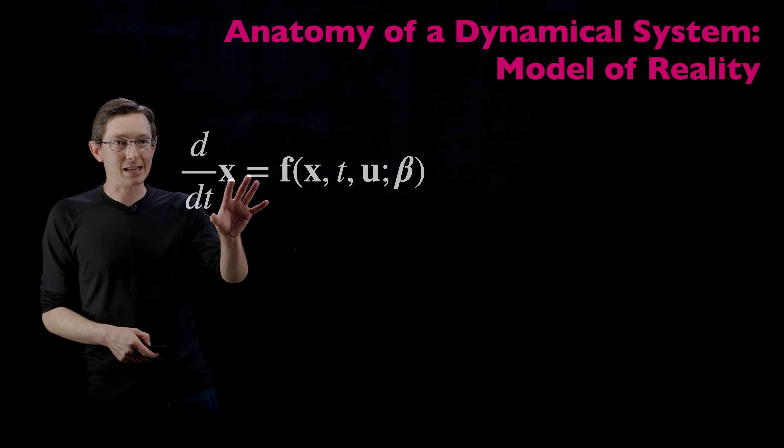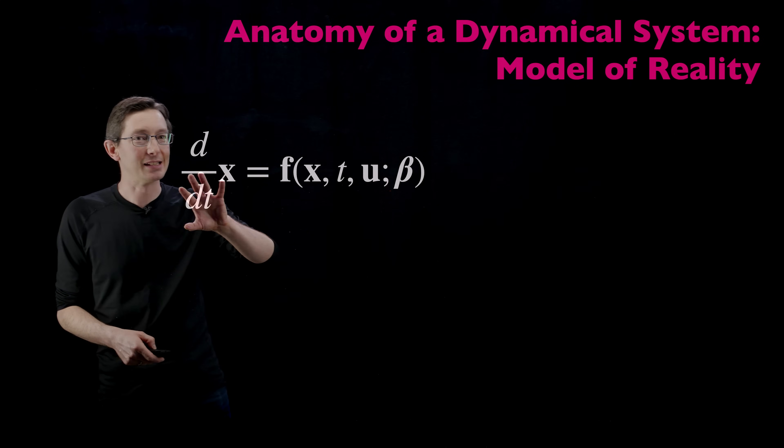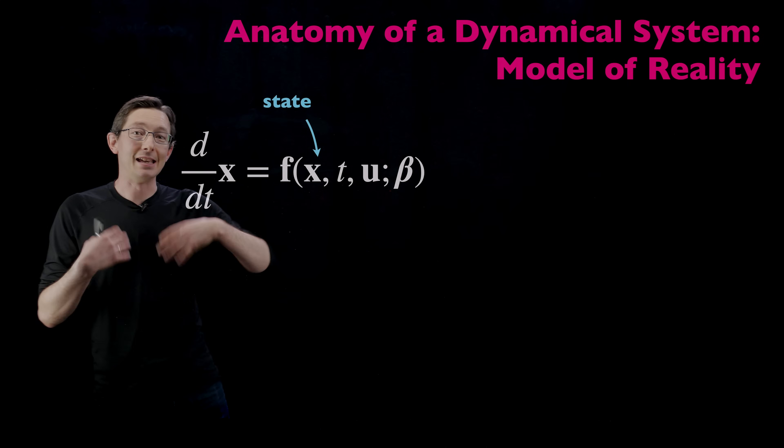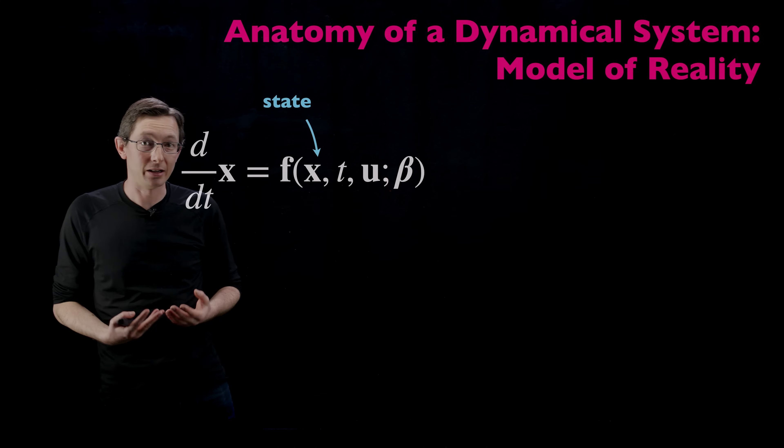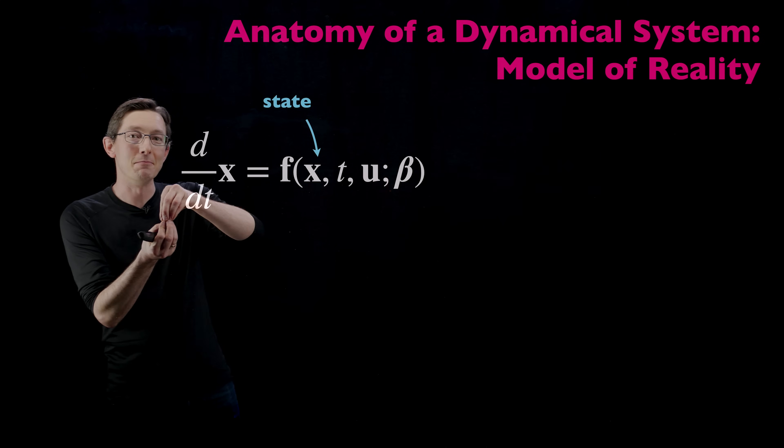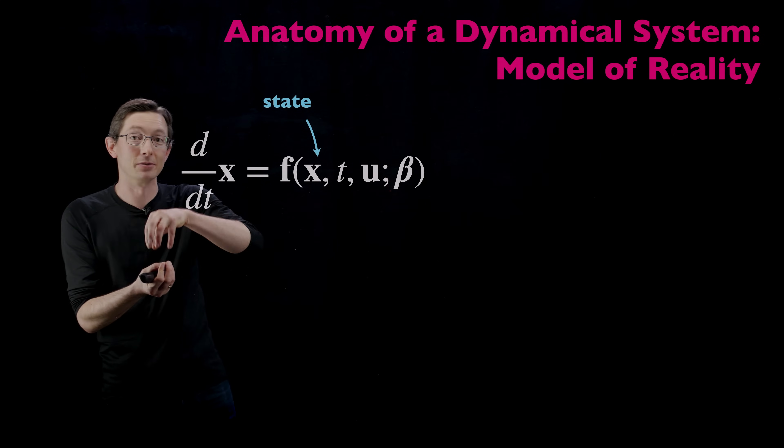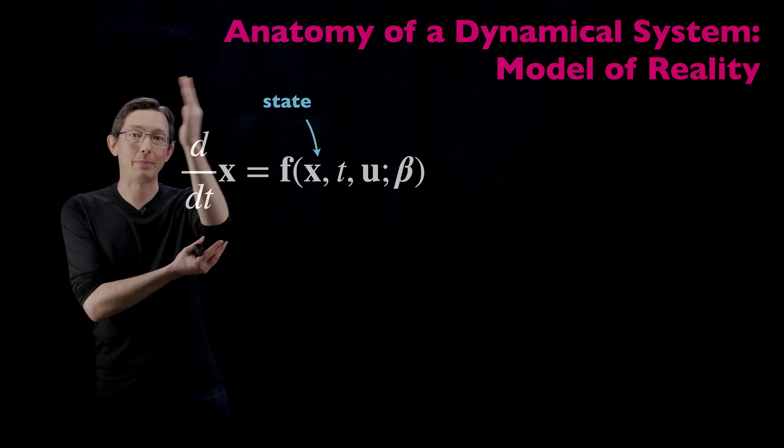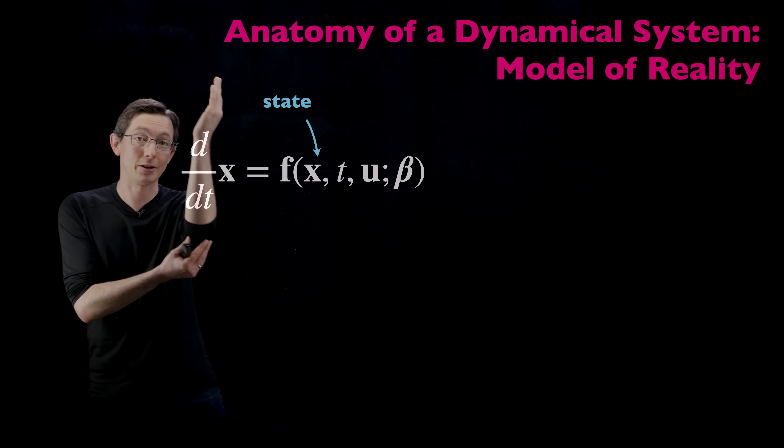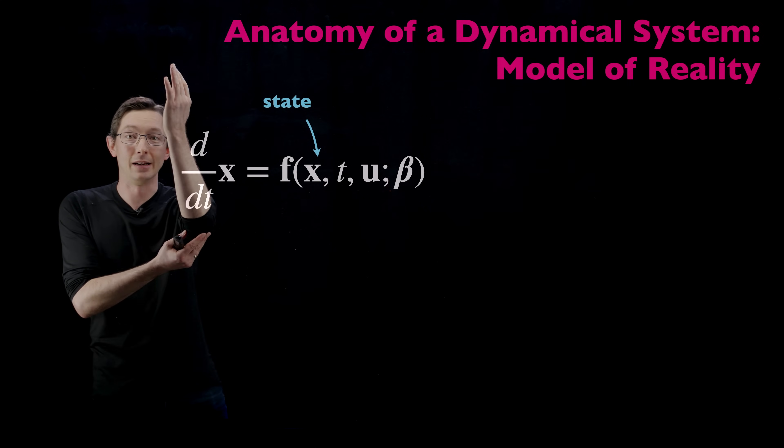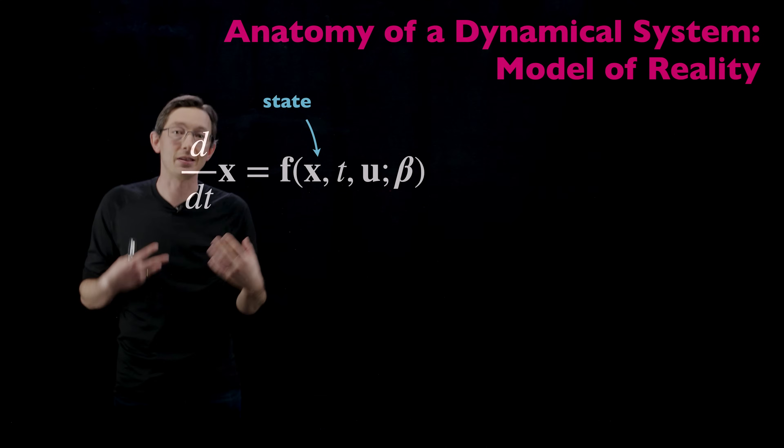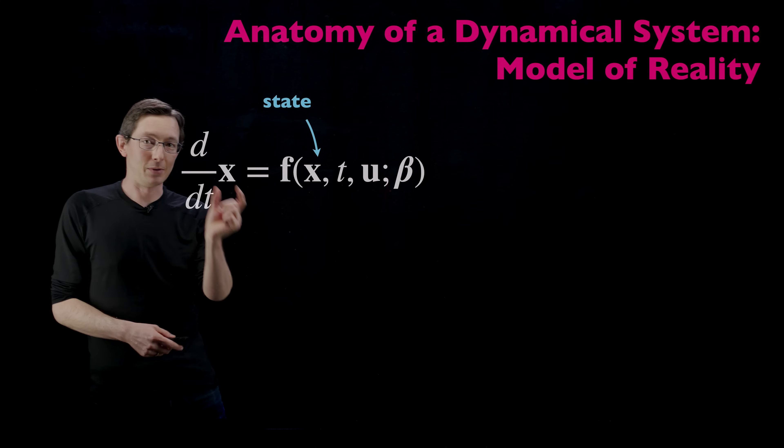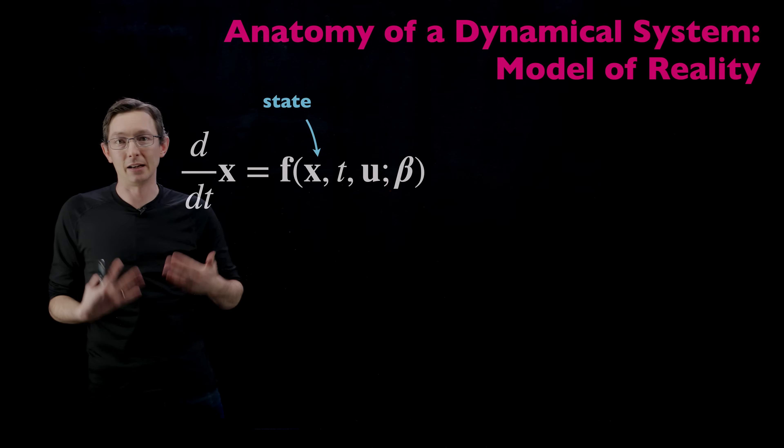So this is our simple model of a dynamical system. It's a system of coupled differential equations. X is a vector that represents the state of our system. It is a vector that has the minimal number, set of values that you need to describe your system. For example, if I have a pendulum, then that pendulum is uniquely defined not just by its angle theta, but by its angular rate theta dot. So the state of that pendulum system is theta and theta dot in a vector.